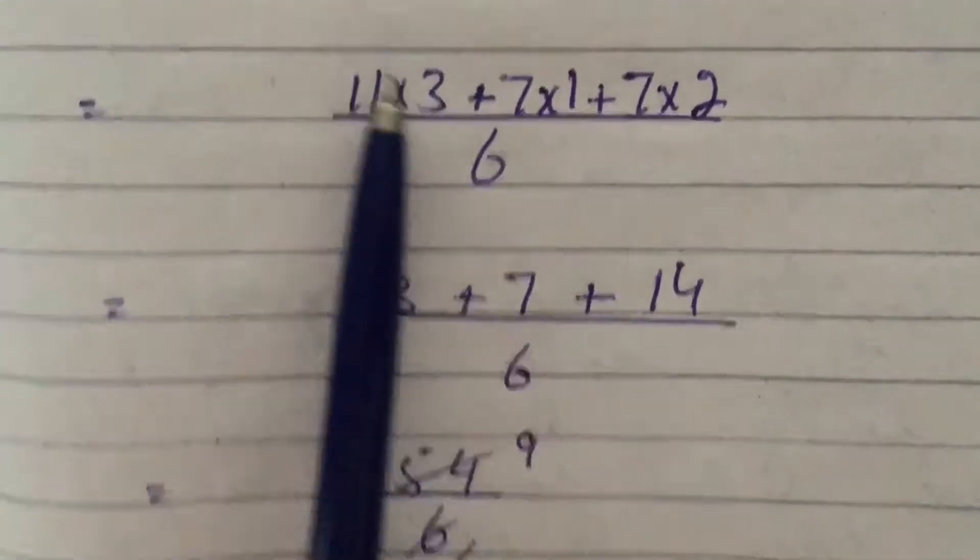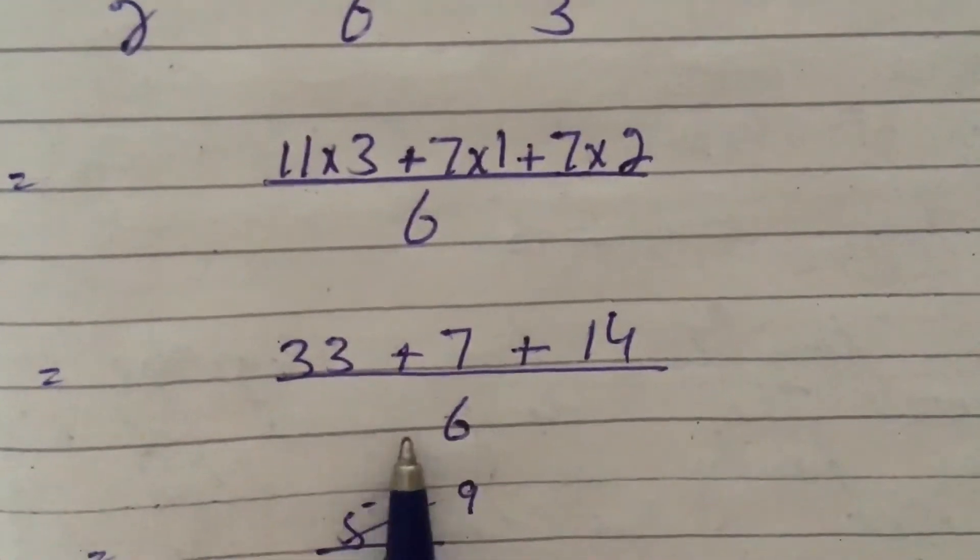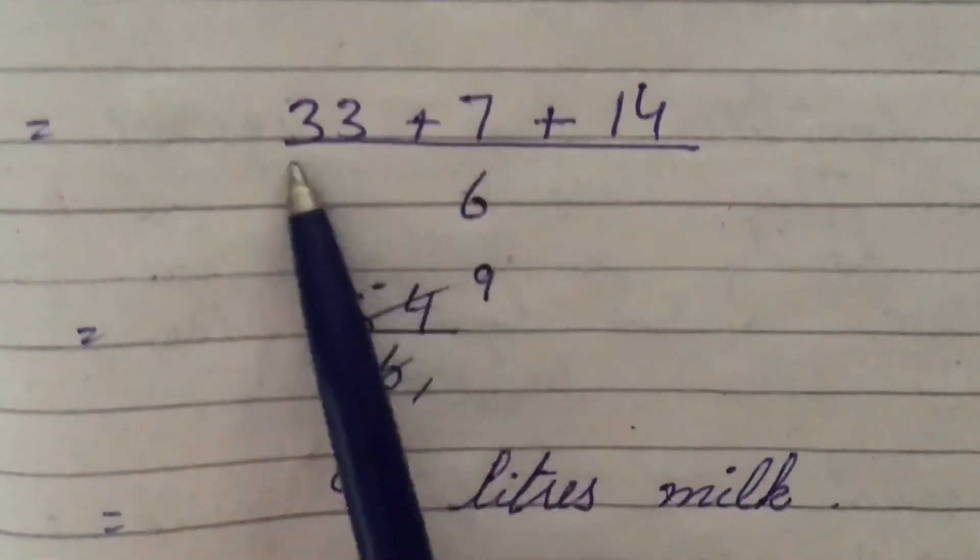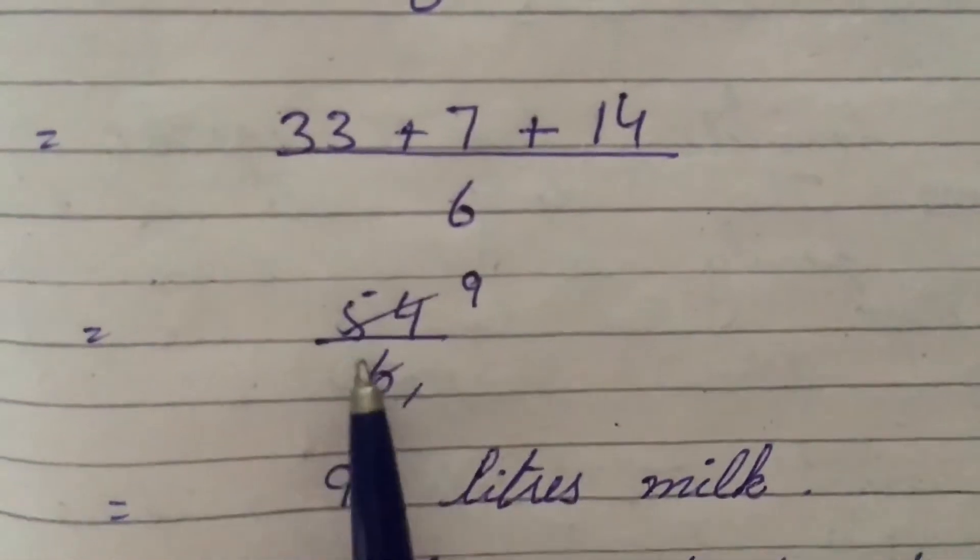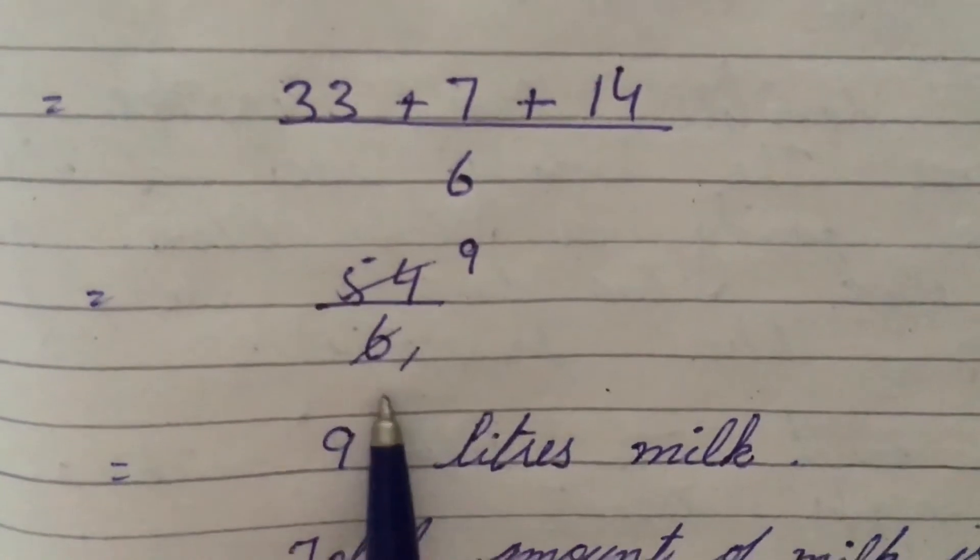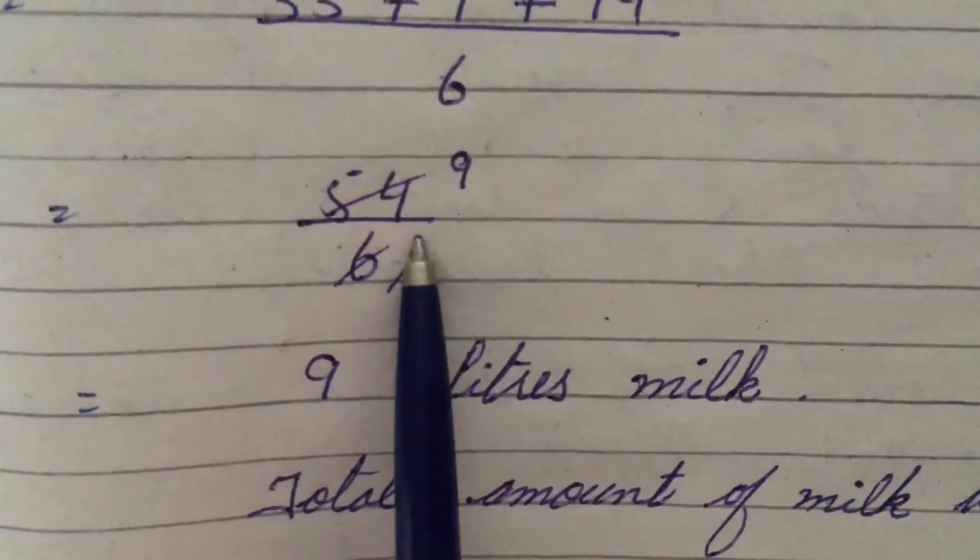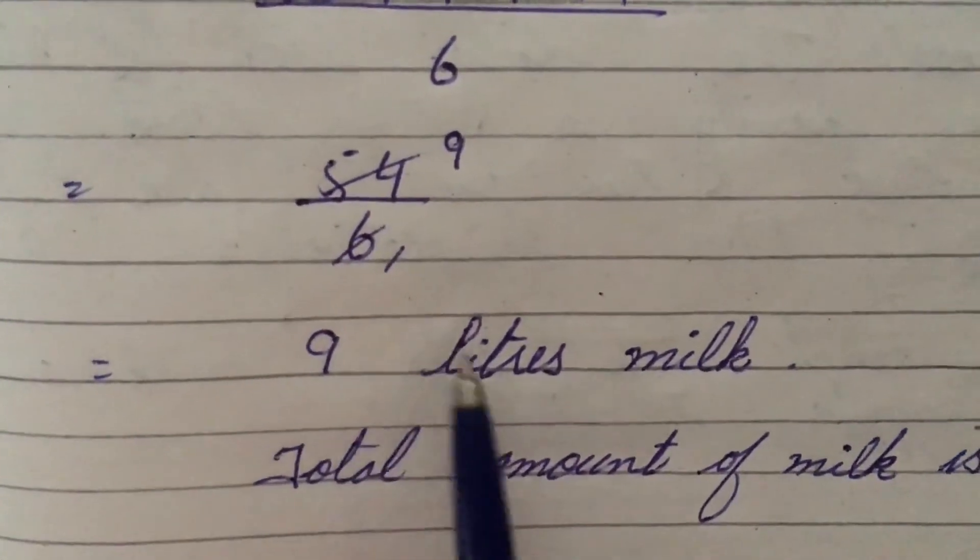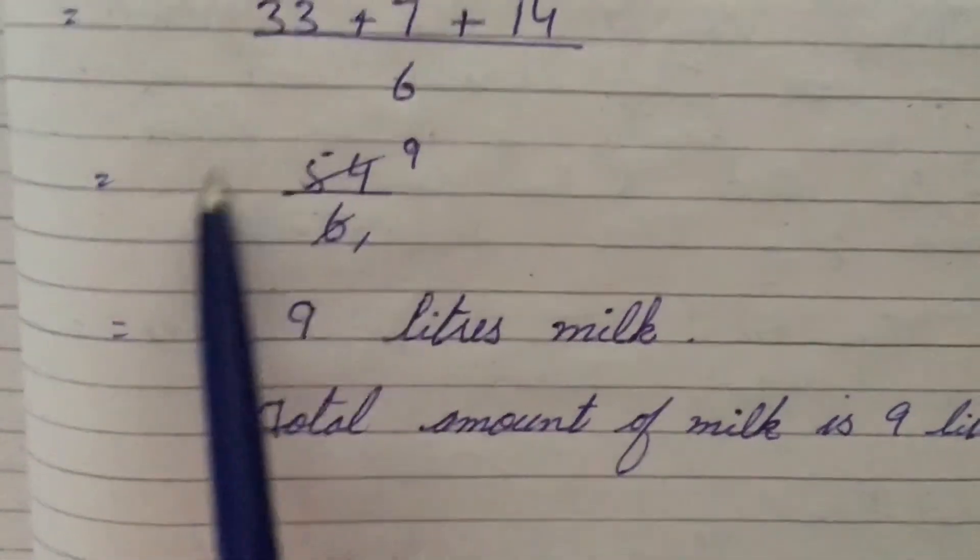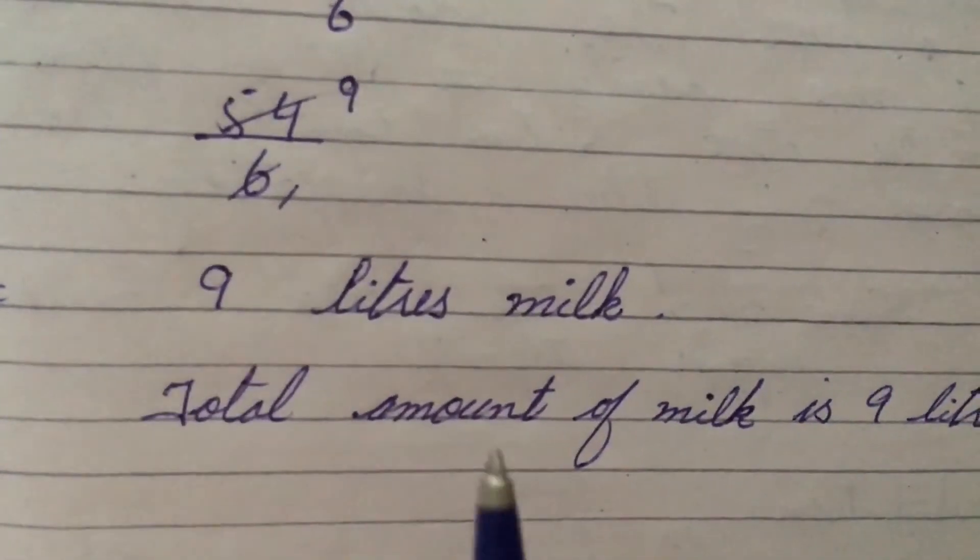Next step: 11 times 3 are 33, 7 times 1 is 7, plus 7 times 2 are 14, and divide it by 6. So now 6 times 1 is 6, 1 is 6, and 6 times 9 is 54, so 9 liters milk. What does it mean? It means that all 3 families together they are getting 9 liters milk from the milkman.